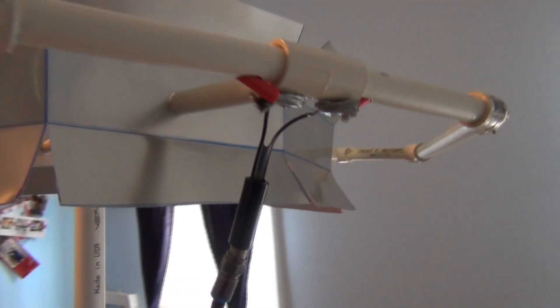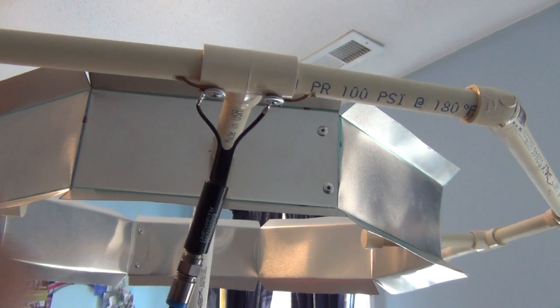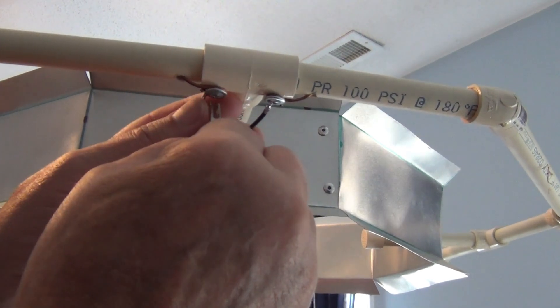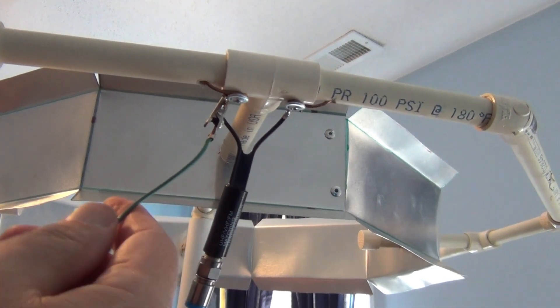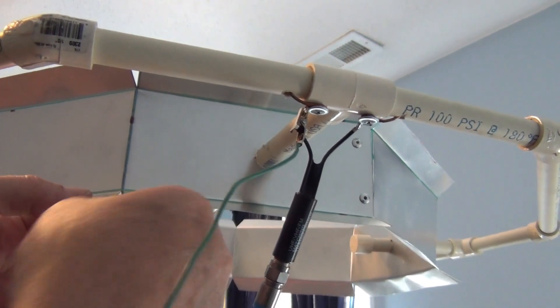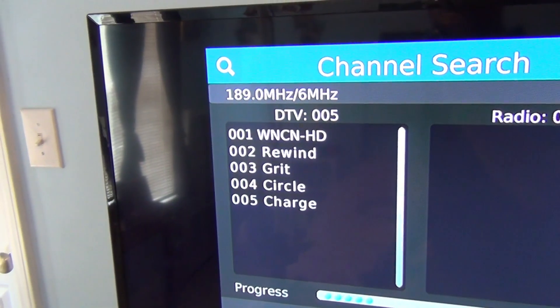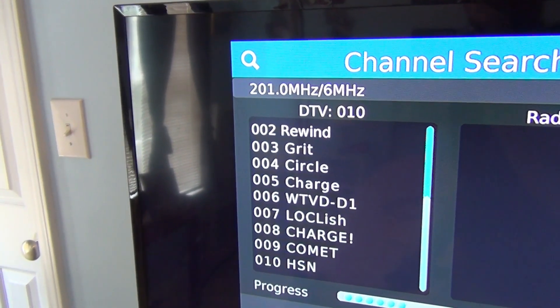While I'm doing these tests, I have another viewer-suggested modification. A few of you have suggested bonding the reflector to the shield terminal of the matching transformer. You said that this would make the aluminum act as more of a ground plane and enhance the reception. I jumper a connection and re-scan again, and the results are, as far as I can tell, exactly the same as without it.